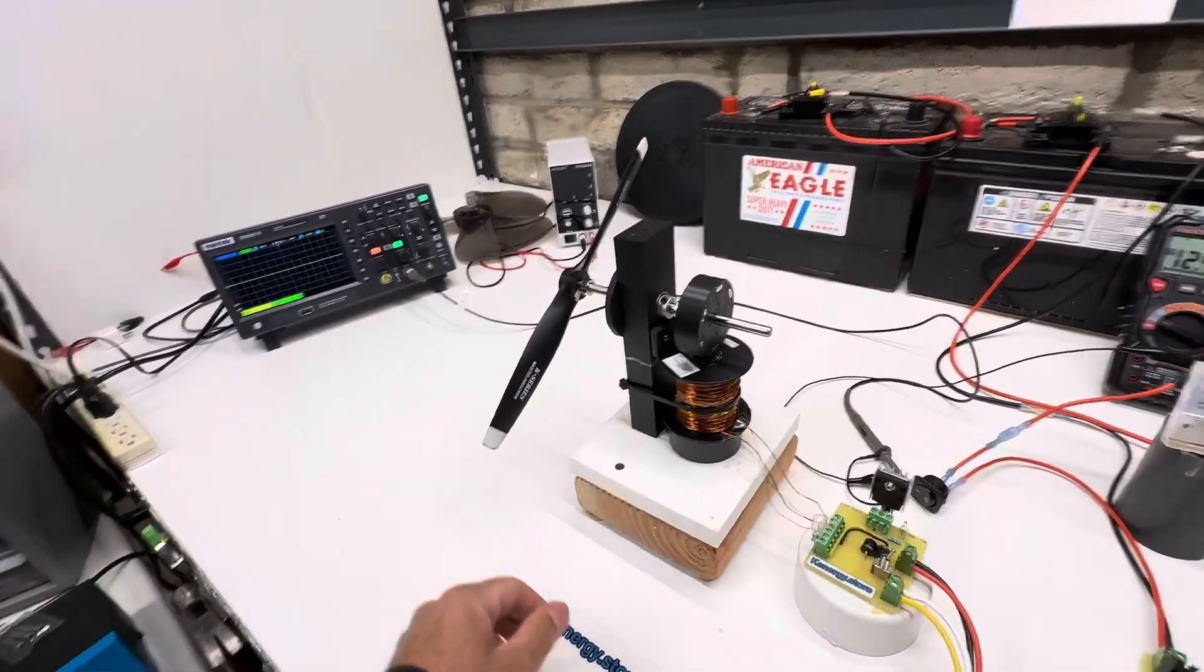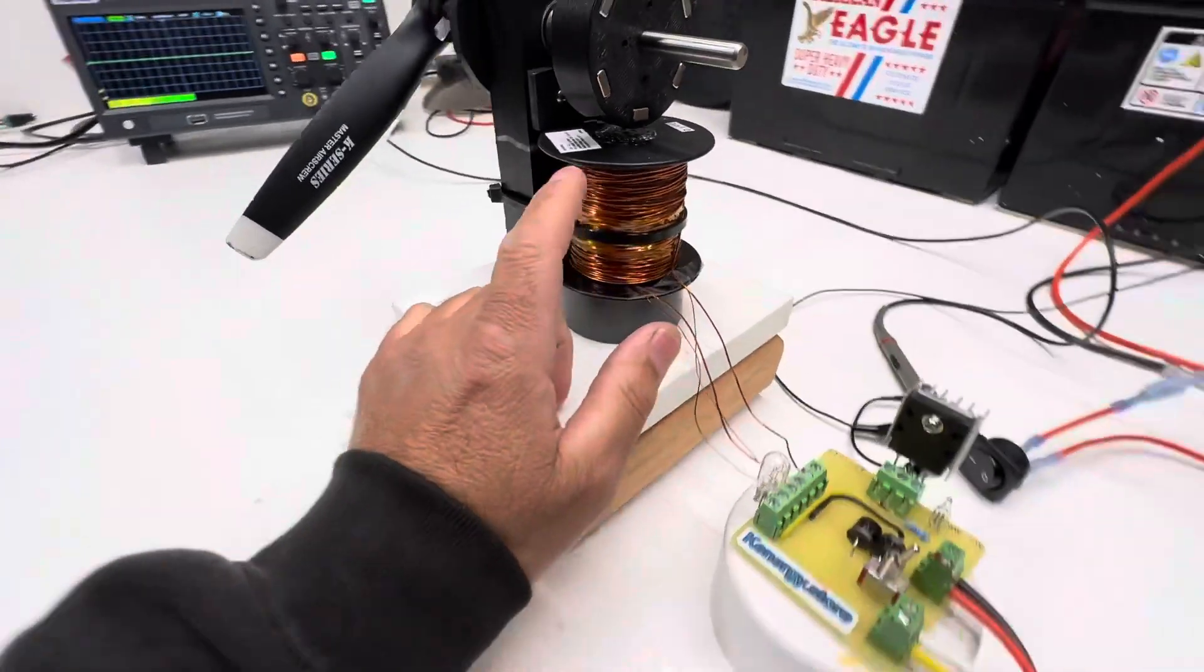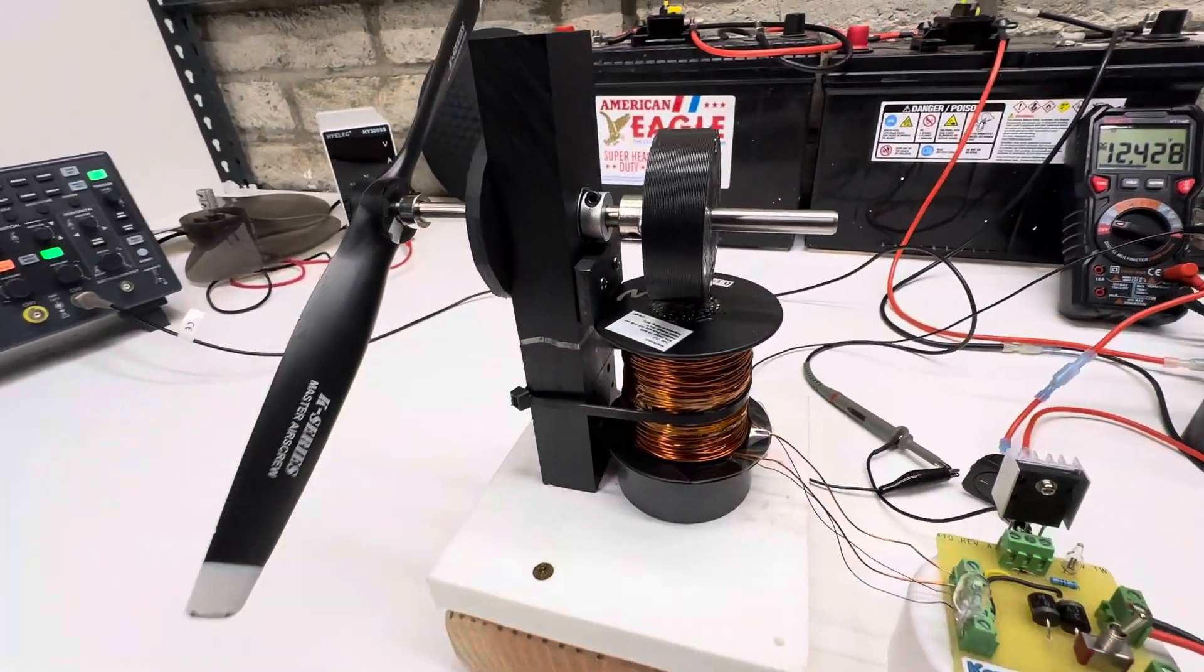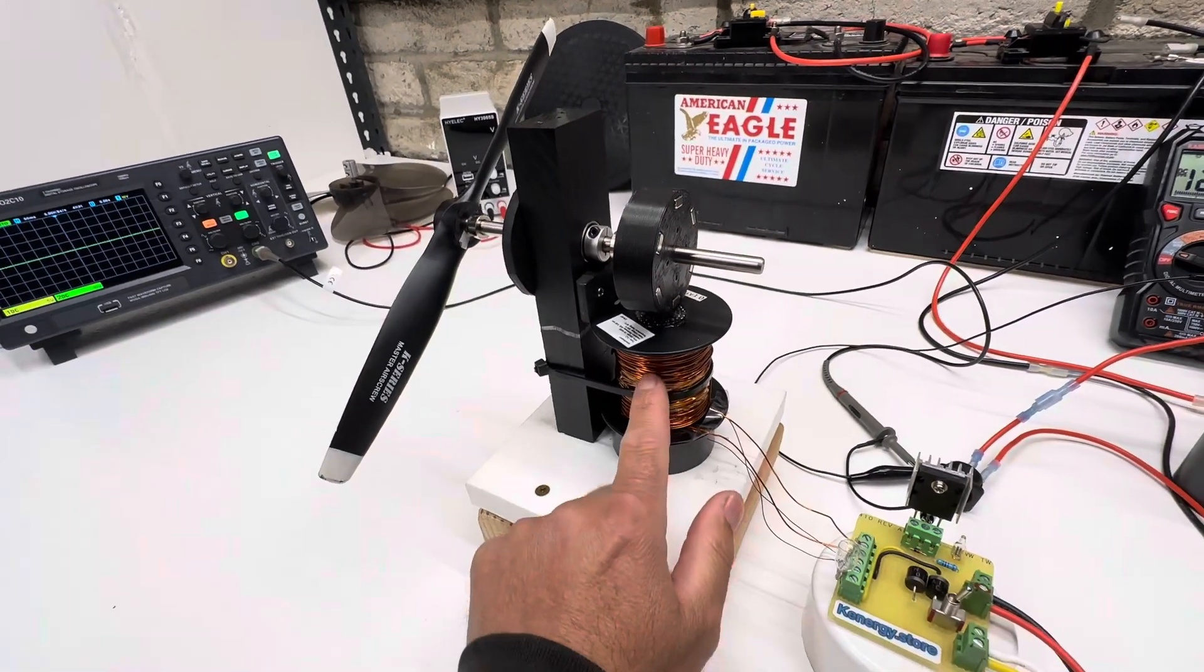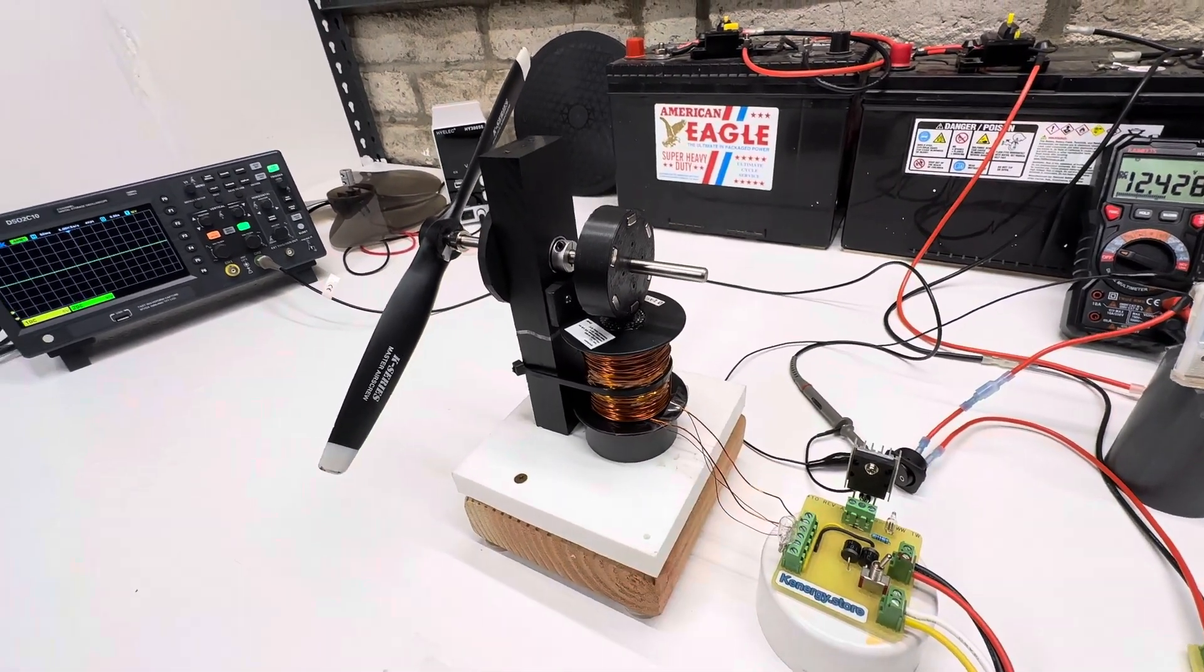So this motor is a Bedini motor. I have a core here. This is filled with the welding rods. They're actually brazing rods. And this is 450 turns of number 20 and number 26.